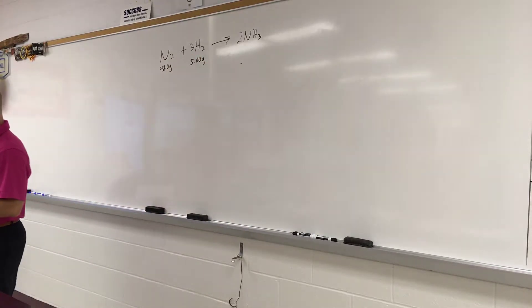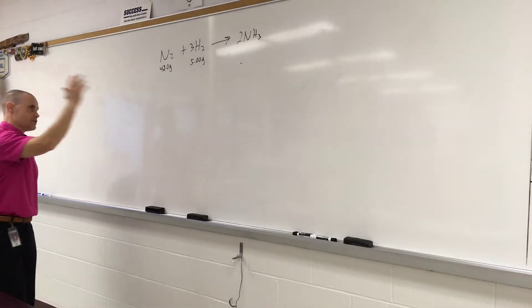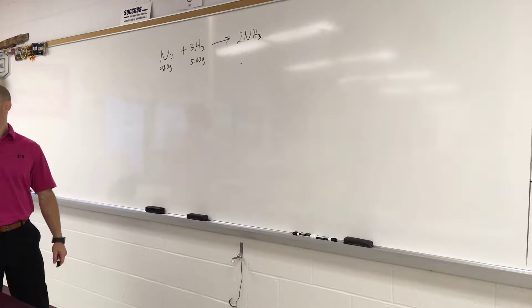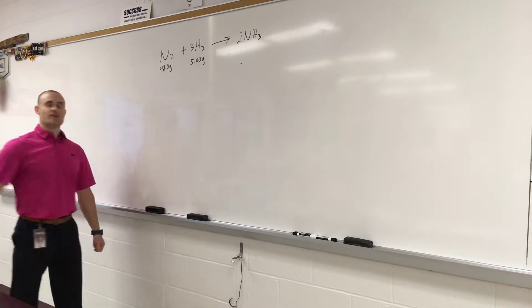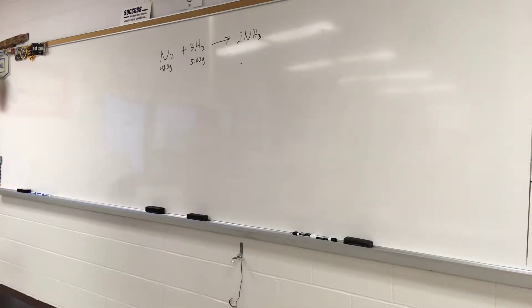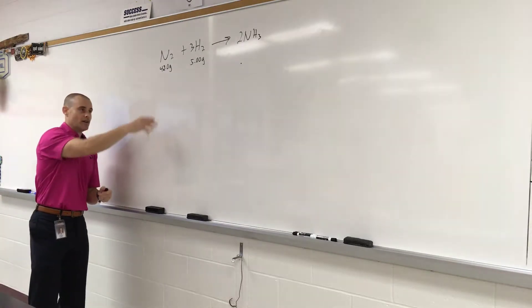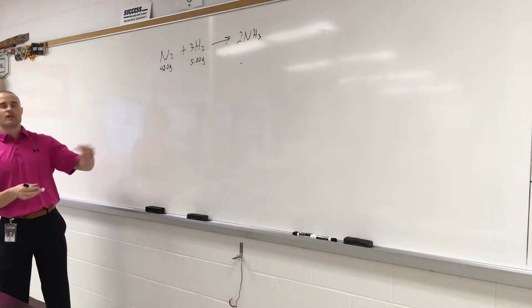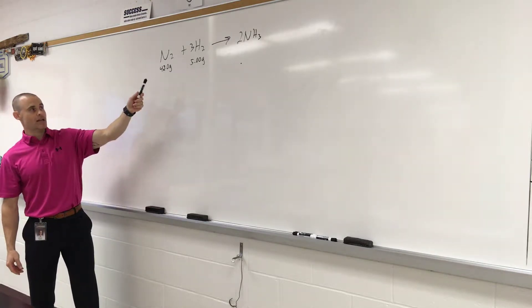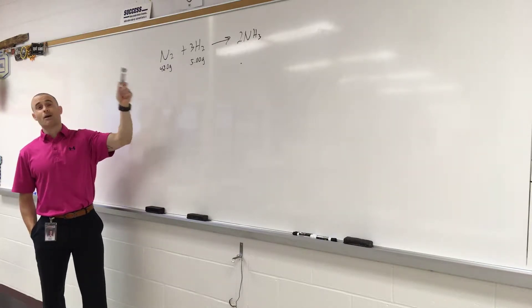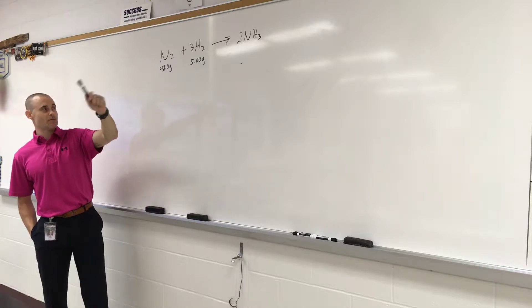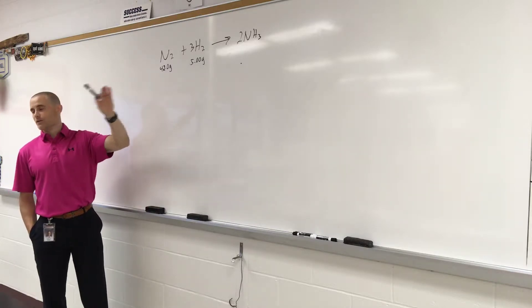Now just looking at the numbers, kids want to jump to conclusions. 5 grams is way less than 42. So kids want to say, oh, hydrogen is limiting because there's less of it. It's not that easy. Because of the mole ratio, 3 to 1, it might not be. We have to calculate it. We have to prove it. So on an AP test, you might have to prove that this is limiting or that's limiting.